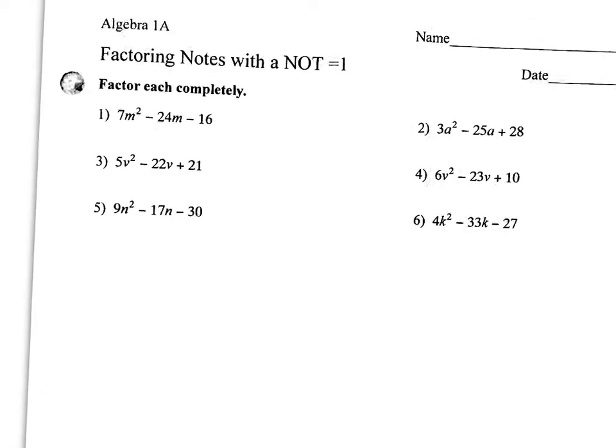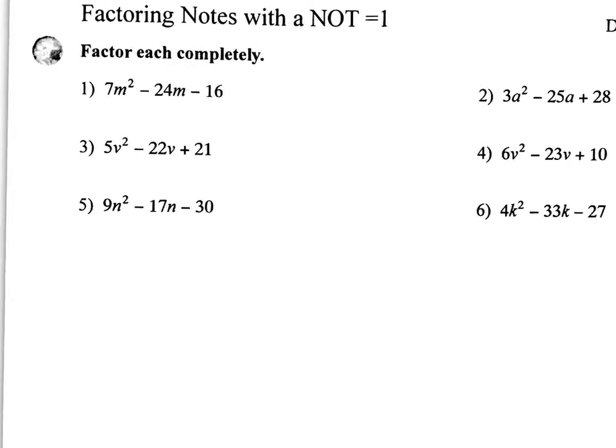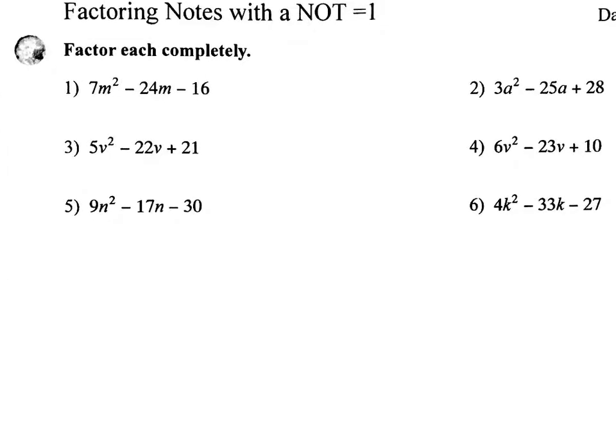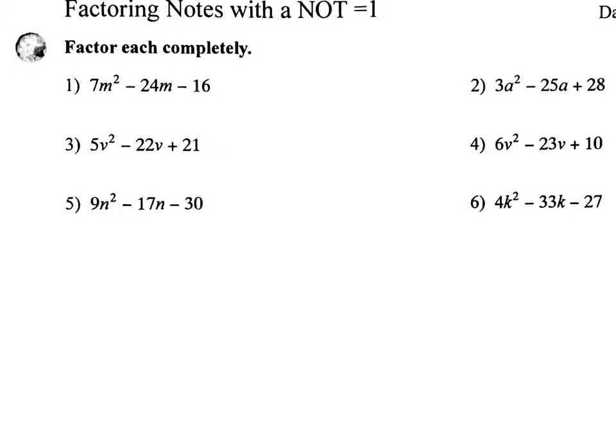So we're going to continue to use bottoms up method. We're just going to go through this quite a bit faster because now you've taken notes on it. So the first thing again I'm going to do is I'm going to write over some of these so I've got room. So remember we talked about in the bottoms up method how the first thing you do is you take the leading coefficient multiply here to get a new value. So in this case that's going to be negative 112. So this now becomes m squared minus 24m minus 112.